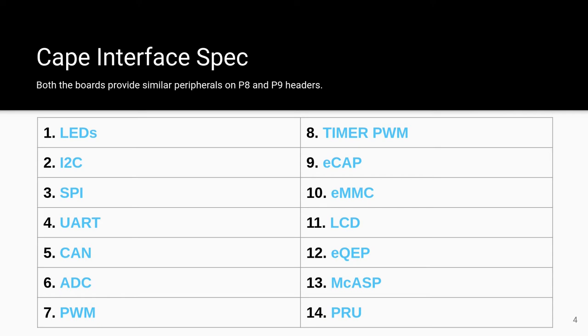For more information, you can check out the CAPE interface spec on eLinux wiki for details like pin header references and complementary device tree overlays for all the bone buses shown here.